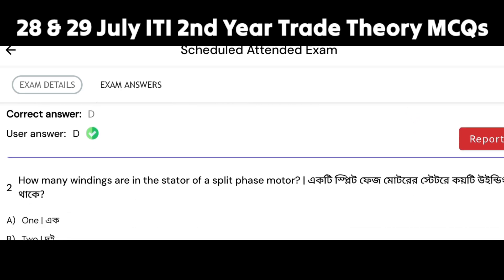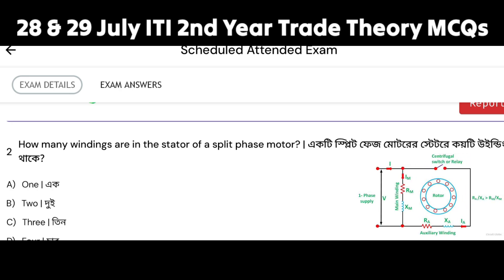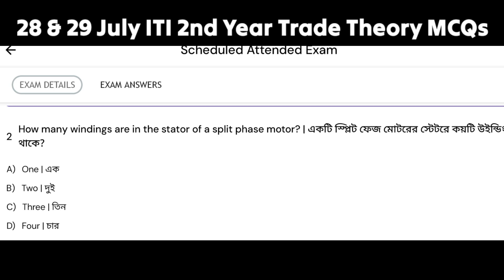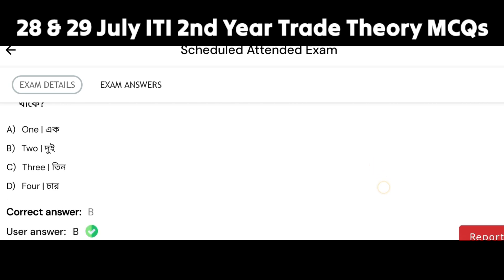The next question: how many windings are in the starter of a split-phase motor? The split-phase motor has a main starting winding and a running winding. Counting here: one, two, three, four — so here we have two windings.